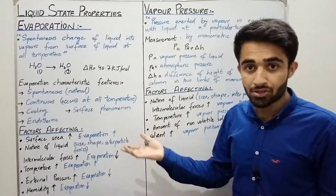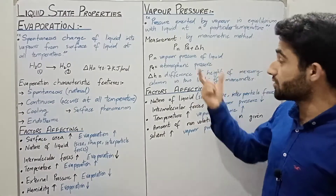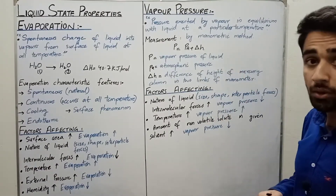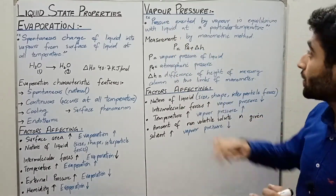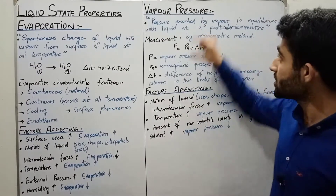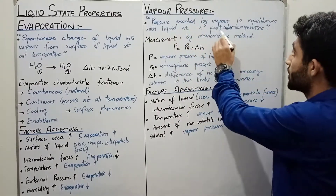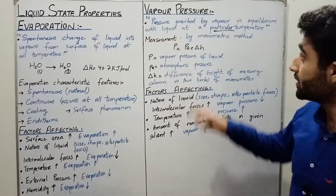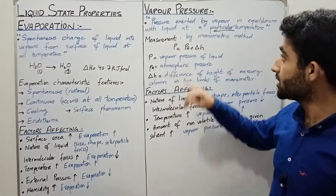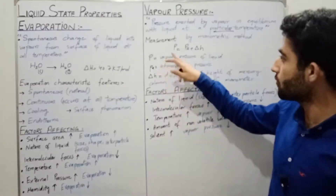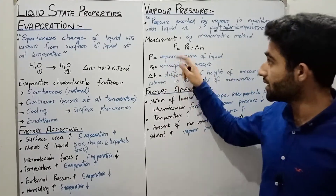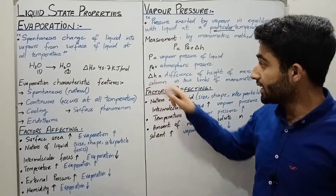The next liquid state property is vapor pressure. By definition, it is the pressure exerted by the vapor in equilibrium with liquid at a particular temperature. Vapor pressure is measured by the manometric method using the formula: P = Pa + ΔH, where P is the vapor pressure, Pa is the atmospheric pressure, and ΔH is the difference in height of the mercury column in the two limbs of the manometer.